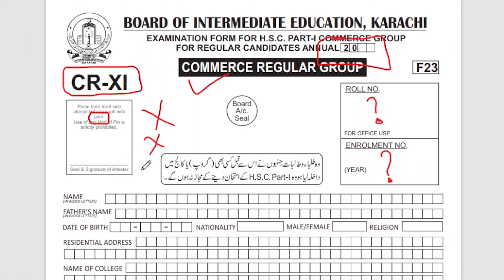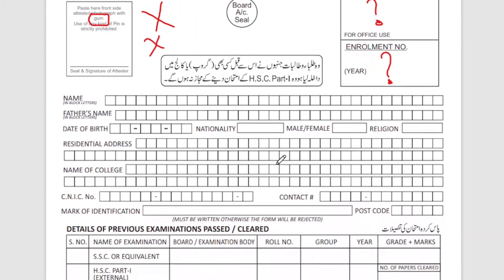If you do not follow these rules, your form will be rejected. You will have to write your name, father's name, and date of birth — these three things are very important. If you make mistakes in these fields when filling out the form, it will be rejected and there will be a lot of issues. So be careful.